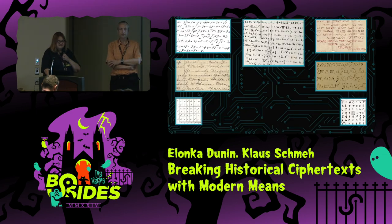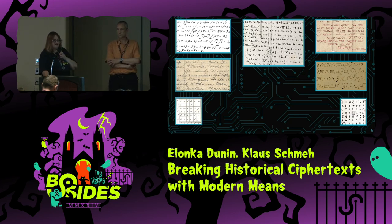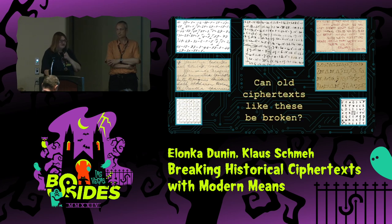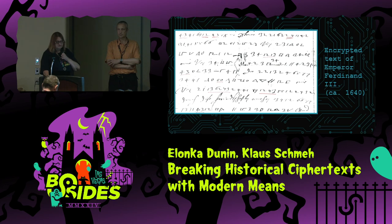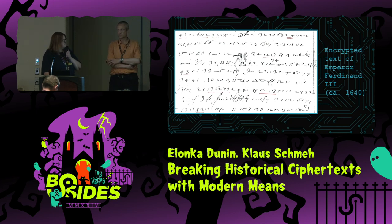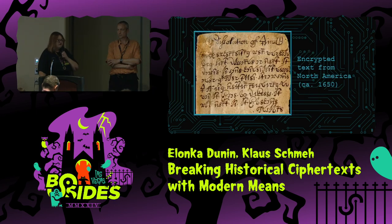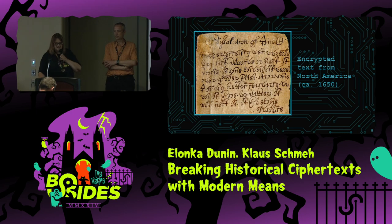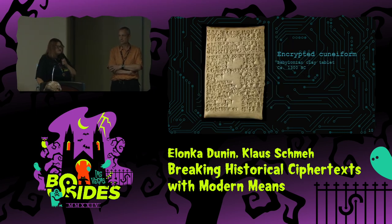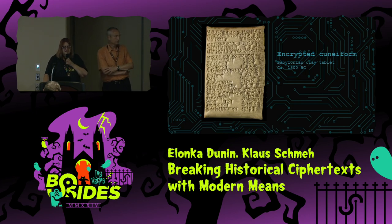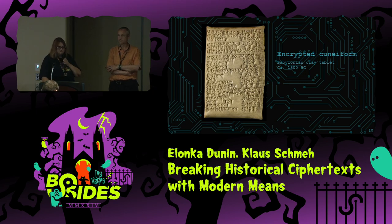There are many thousands of old ciphertexts. Some have been broken and some have not. The question is, can they be broken with modern means? Here's an example: an encrypted text by Emperor Ferdinand III from the 17th century, and one from North America, also from the 17th century. Here is the oldest encrypted thing we know about — from 1300 BC. It's encrypted cuneiform. Someone was encrypting the recipe for a dye.